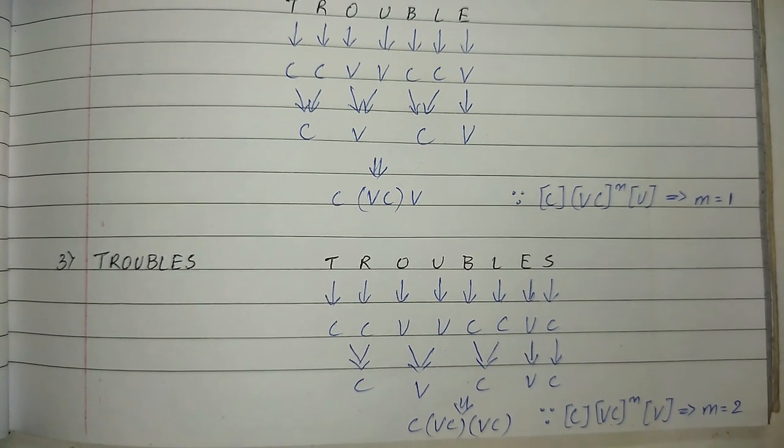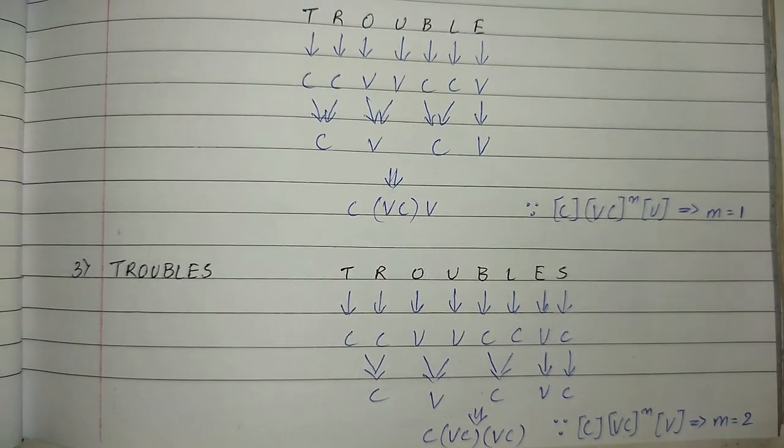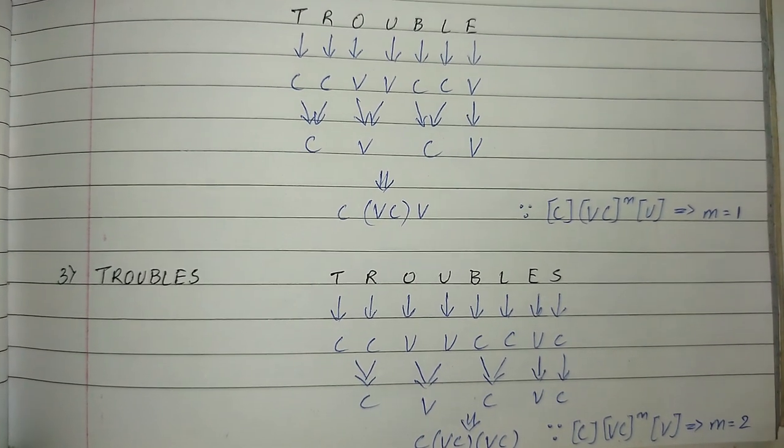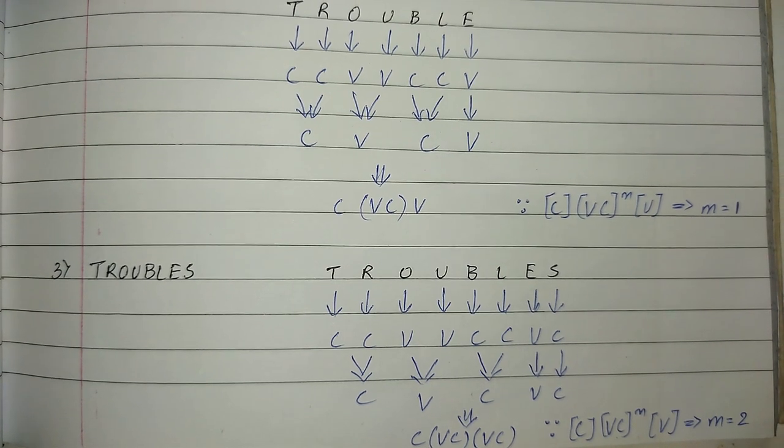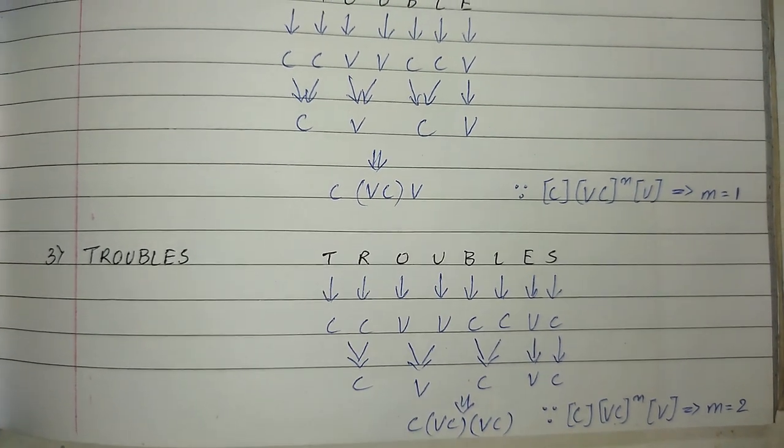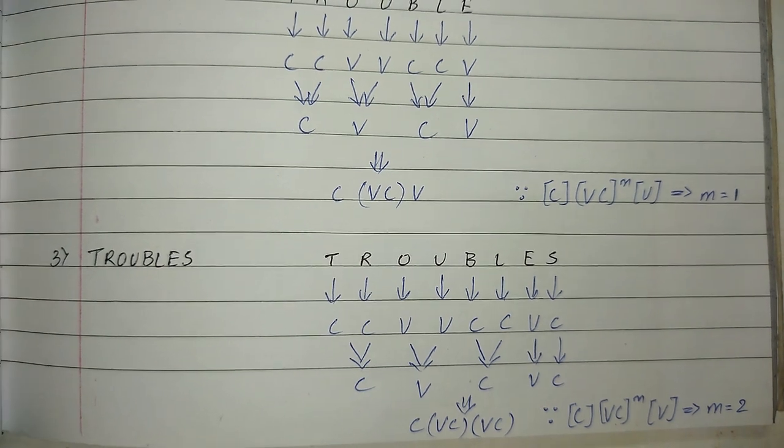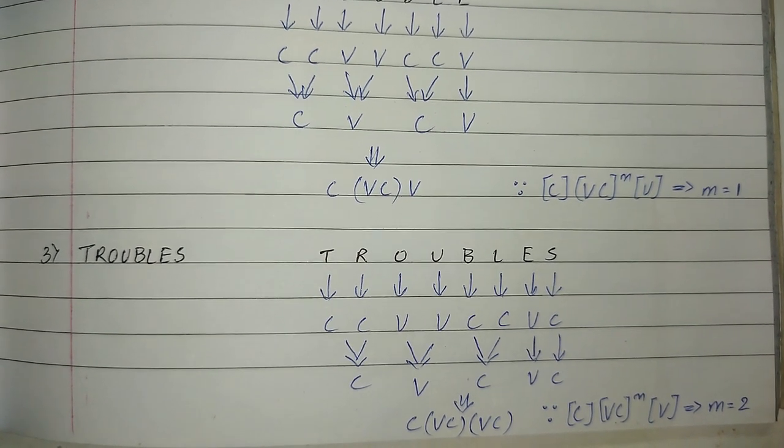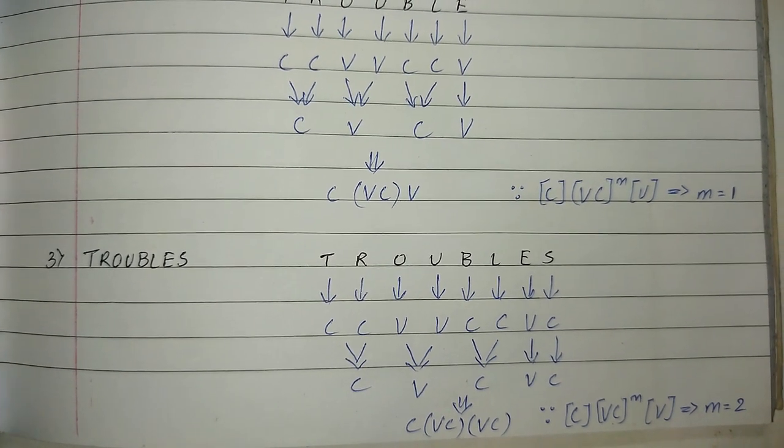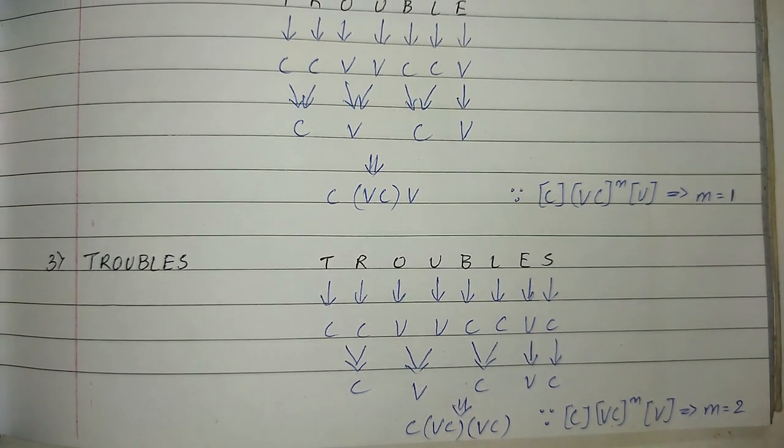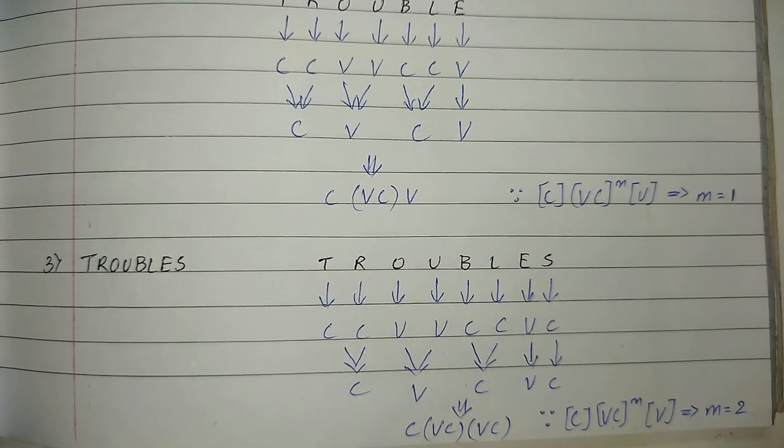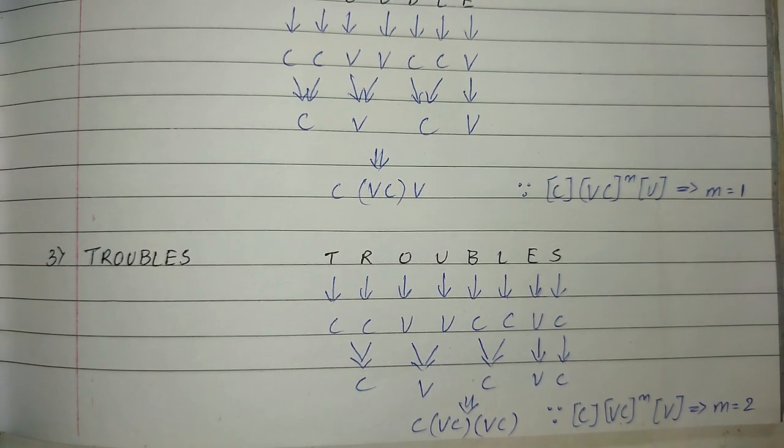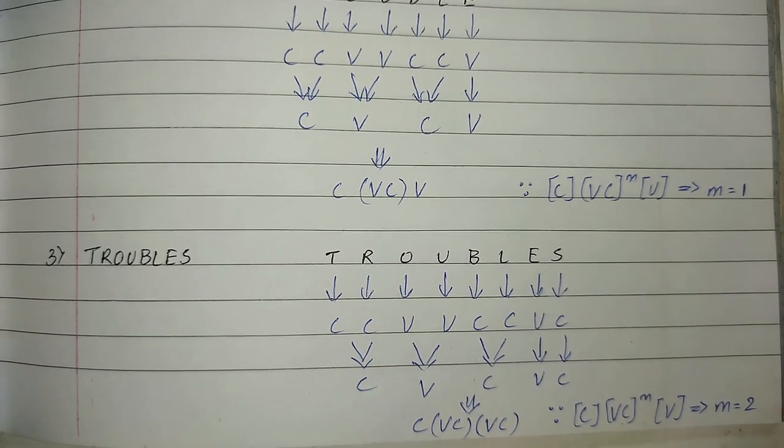Now we have a third example: TROUBLES. It will be similar till TROUBLE, but we have one more consonant added here, that is S, and it will change the output. Here we will have C, VC, VC, so there are two VCs, which is VC raised to two. So our value for m will be two.